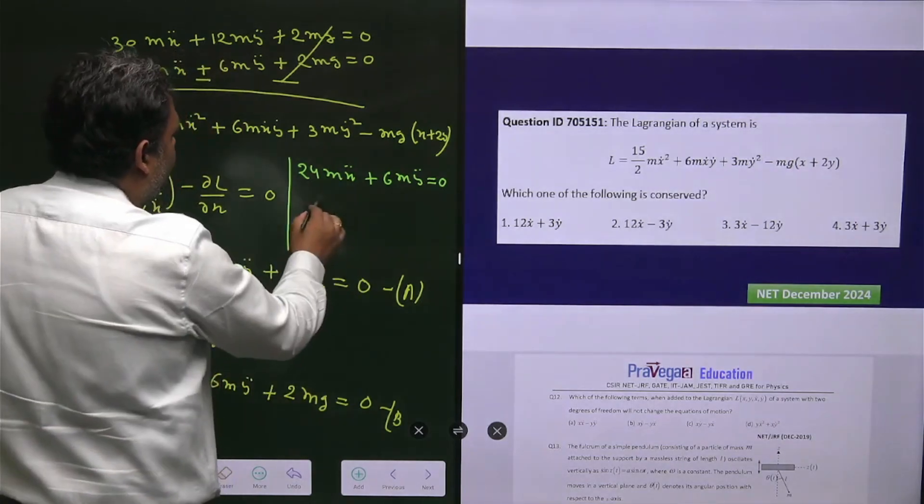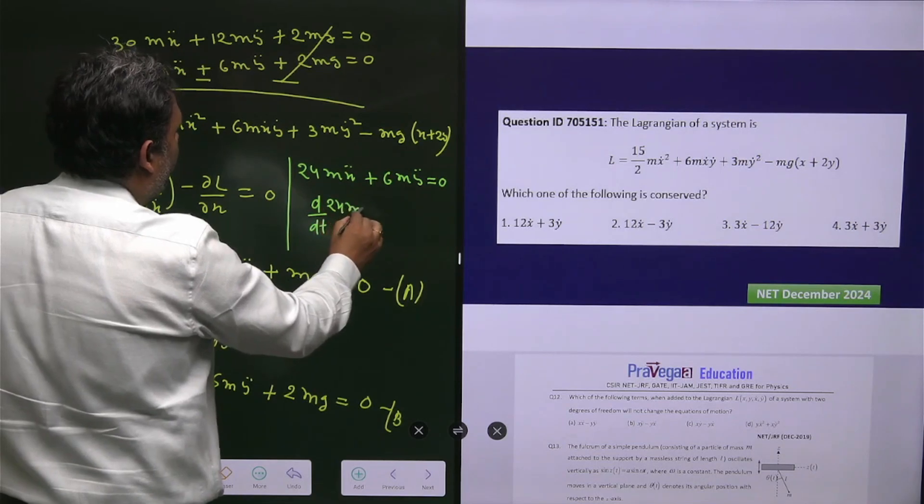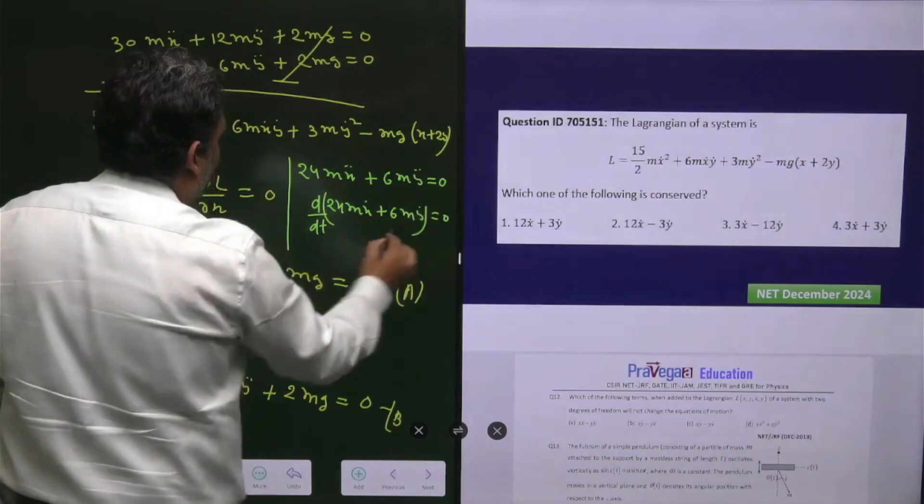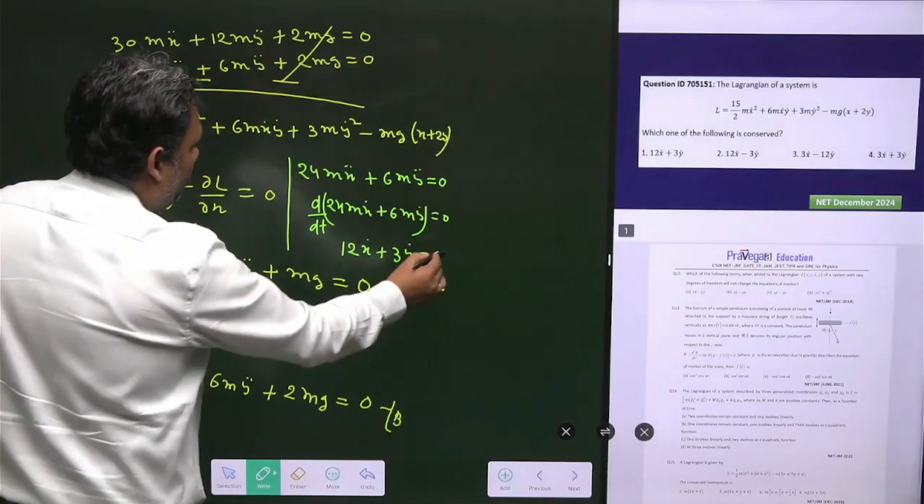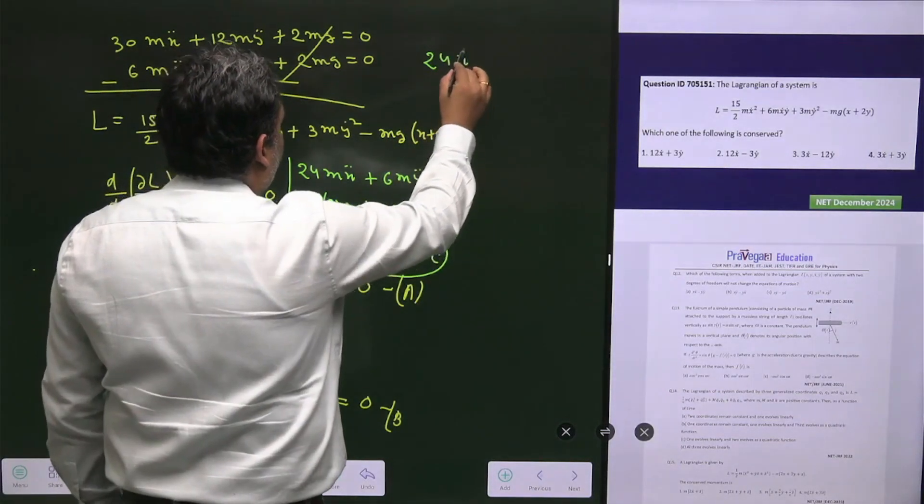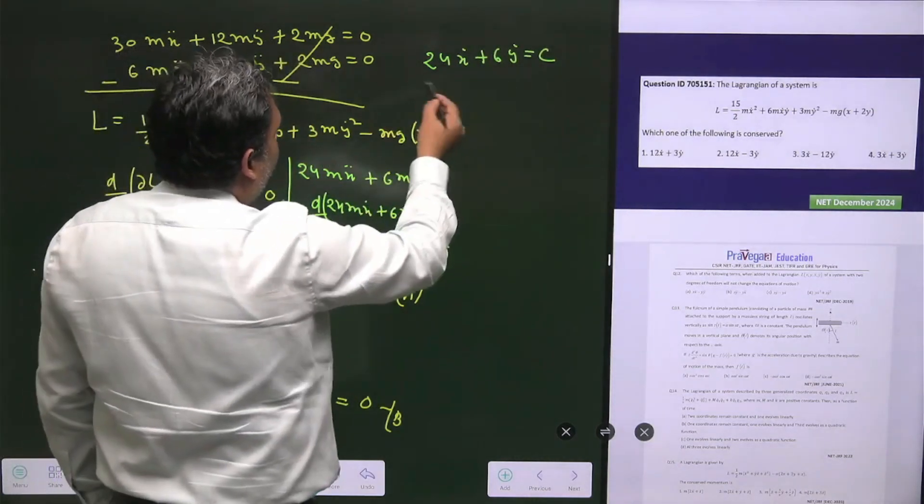The value is 24mẍ + 6mÿ = 0. You can write this as d/dt(24mẋ + 6mẏ) = 0. From there you get 12ẋ + 3ẏ equals constant. We have 24ẋ + 6ẏ constant.